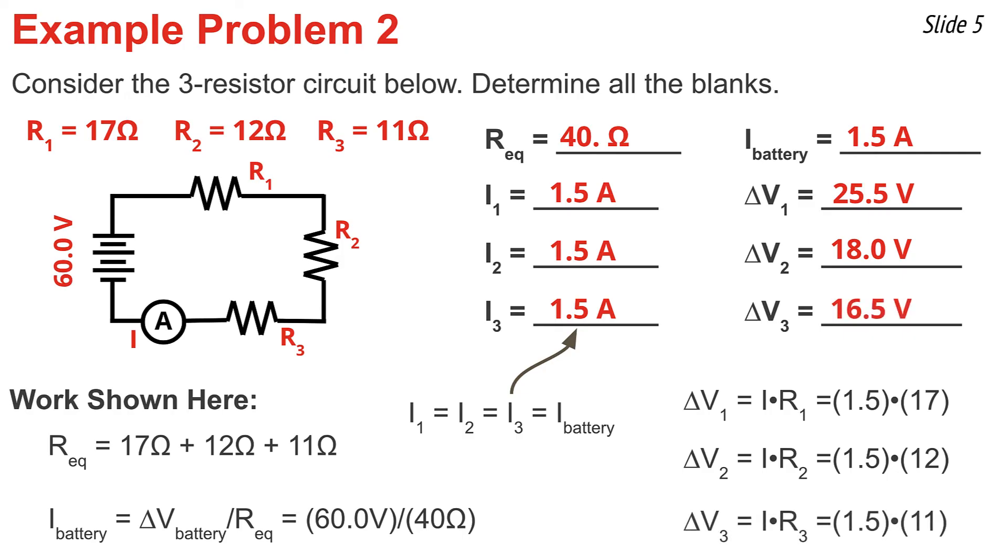As a final check, I'm going to make sure the sum of all these voltage drops is equal to the battery voltage. So I add 25.5, 18.0, and 16.5, and sure enough, I get 60. I've done a good job.